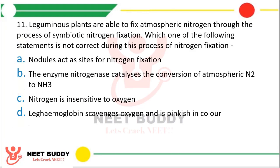Question 11: Leguminous plants are able to fix atmospheric nitrogen through the process of symbiotic nitrogen fixation. Which one of the following statements is not correct during this process? Nodules act as site of nitrogen fixation. The enzyme nitrogenase catalyzes the conversion of atmospheric N2 to NH3. Nitrogen is insensitive to oxygen. Leg-hemoglobin scavenges oxygen and is pinkish in color. The correct answer is Option C — nitrogen is insensitive to oxygen is incorrect.